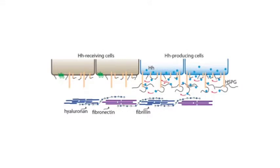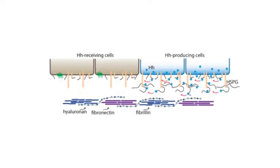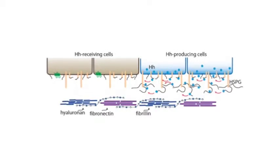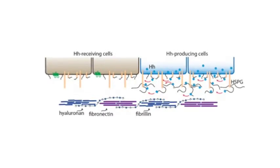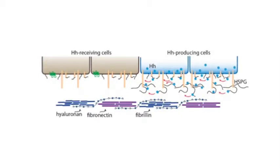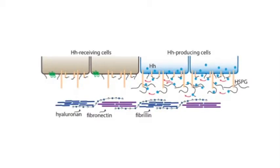Not only that, genetically normal cells that are separated from hedgehog source by mutant territory do not receive hedgehog and are signaling deficient. These observations have been interpreted as functional evidence for a restricted diffusion-based mechanism of dispersion.